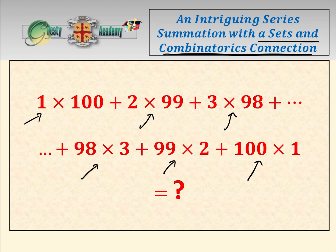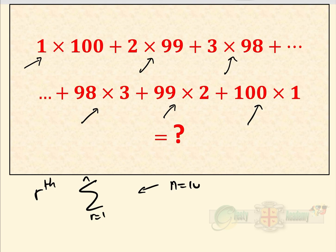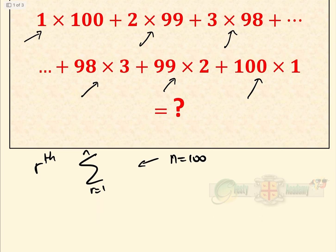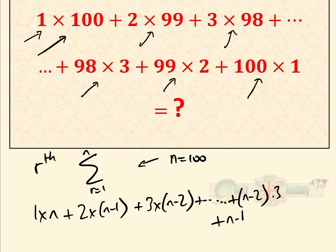First, let's do the question at hand. The approach is to find the rth term, then find the sum of terms from r=1 to n, and finally put n=100. We have 1×n + 2×(n−1) + 3×(n−2) + ... + (n−2)×3 + (n−1)×2 + n×1 as our general summation — for the question at hand, n=100.